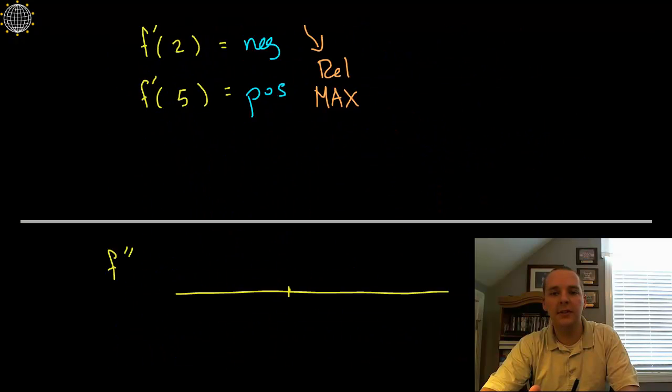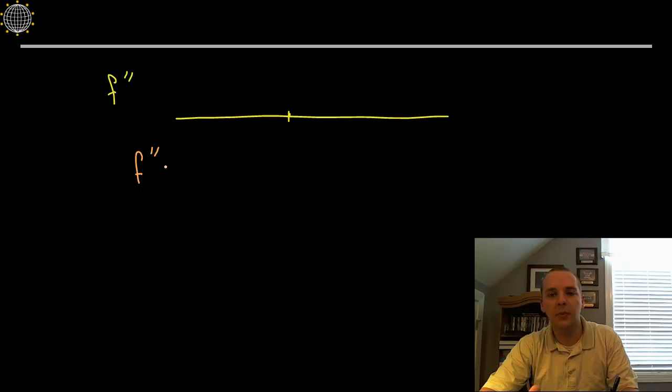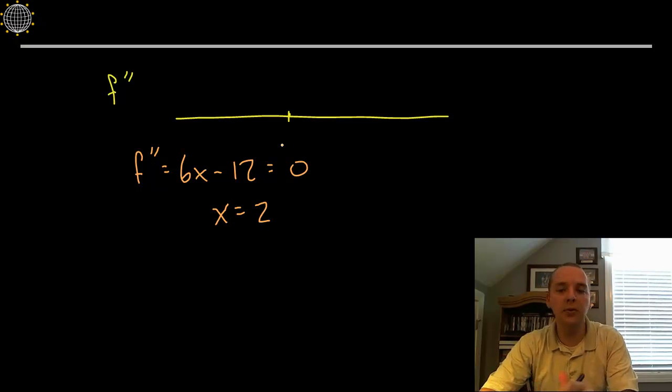The second derivative was 6x minus 12, we set this equal to 0, we get x equals 2. Now 2, this 2 is not a critical value. Why? Because this isn't a 0 of the first derivative, this is a 0 of the second derivative. Now these are often points of inflection. Do I know that it has to be a point of inflection? No. Why? Because the definition of point of inflection was a place where the function changed concavity. So what I have to do is I have to put 2 on a number line, and then see what the concavity is on both sides.